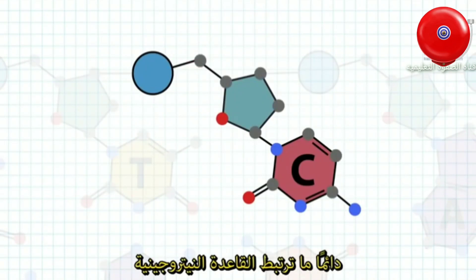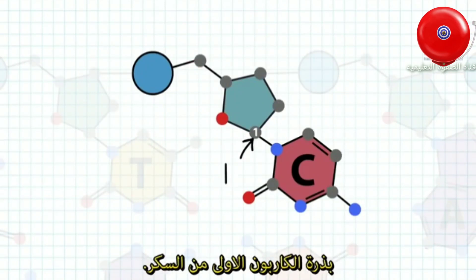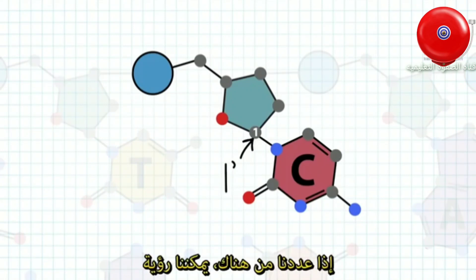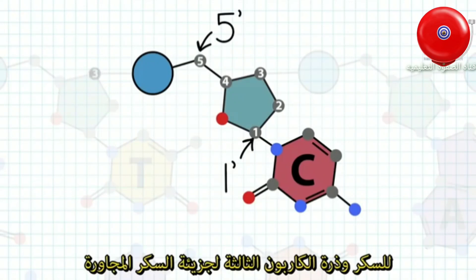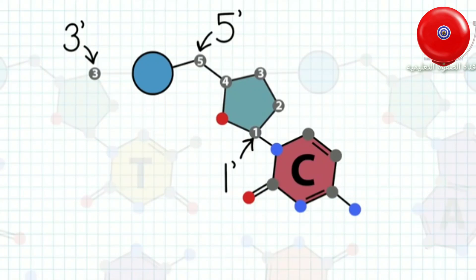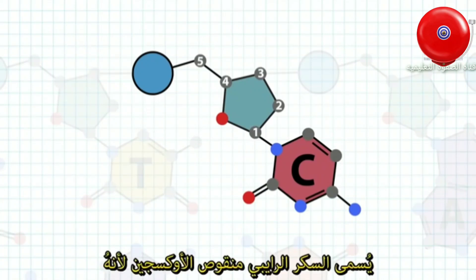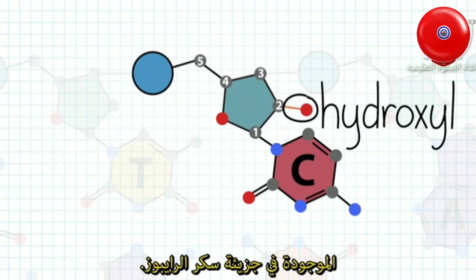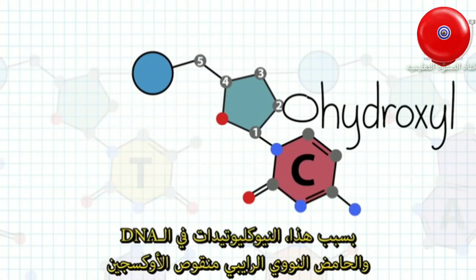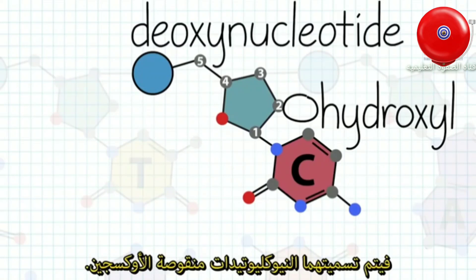The nitrogenous base is always attached at the 1' carbon of the sugar. If we count from there, we can see that there is a phosphate between the 5' carbon of one sugar and the 3' carbon of the neighboring sugar. The sugar is called deoxyribose because it is missing a hydroxyl group at the 2' carbon, which is present in ribose. Because of this, nucleotides in DNA, deoxyribonucleic acid, are called deoxynucleotides.